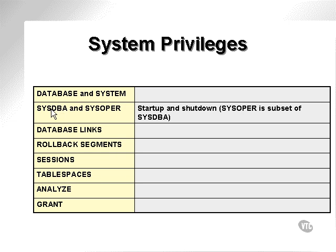The sysdba and sys offer privileges which allow starting up and shutting down. Database link — a database link is a link to a database on a remote server — is database administration. Rollback segments allow the storage of information which allows undoing of operations on the database. Again, database administration.